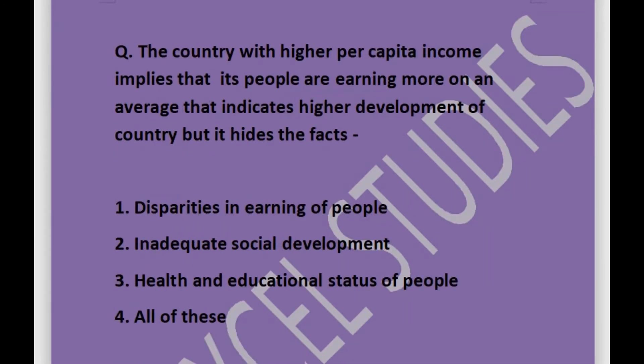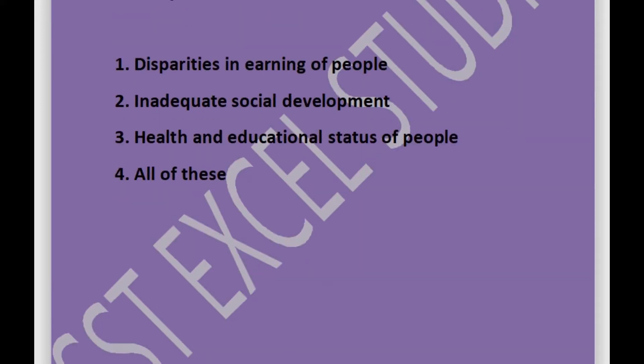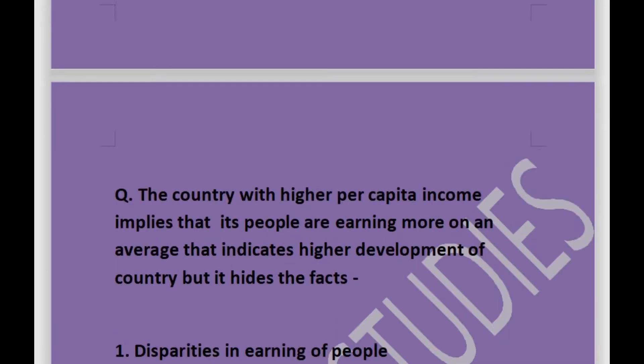Next question: a country with higher per capita income implies that its people are earning more on average, indicating higher development — but it hides the facts. Options are: disparities in earning of people, inadequate social development, health and educational status of people, or all of these. Answer is all of these.